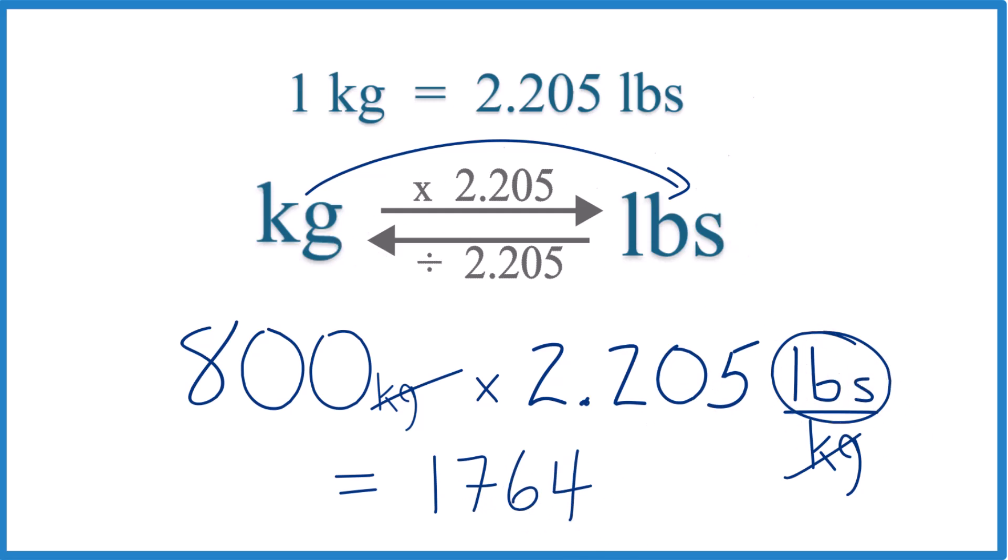The only units left are pounds. So that is 1,764 pounds in 800 kilograms.